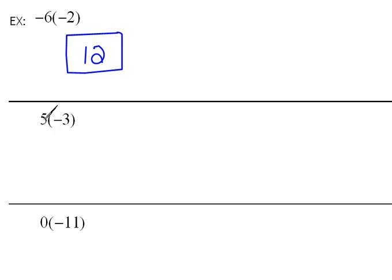This next one says 5 times negative 3. So again, we just multiply 5 times 3, which would be 15, and then we worry about the sign. These signs are different. We have a positive times a negative. So the answer is always negative when the signs are different.